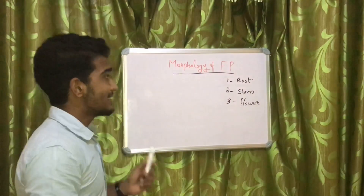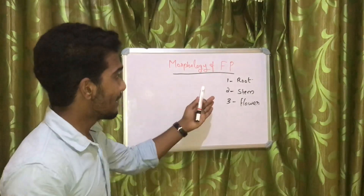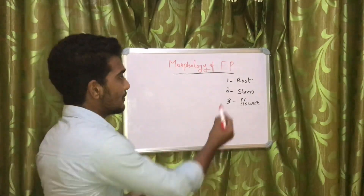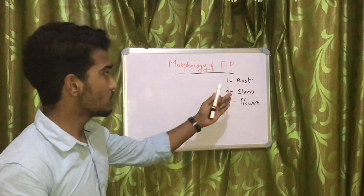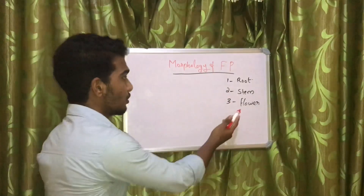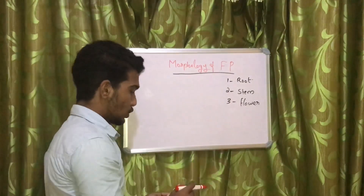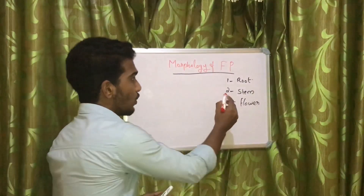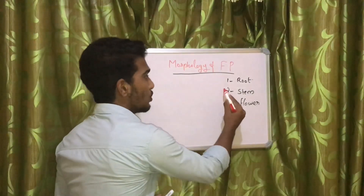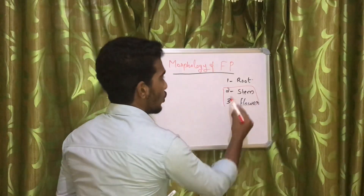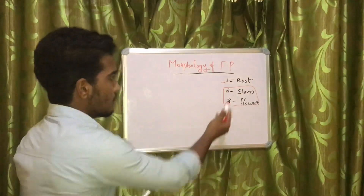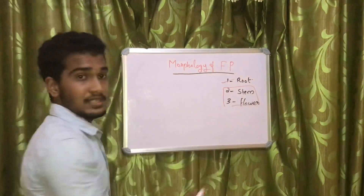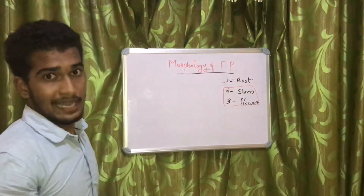In this chapter, we are discussing mainly three categories: number one, root; number two, stem; number three, flower. In this video, we are discussing about only root. Stem and flowers we are discussing in another video.